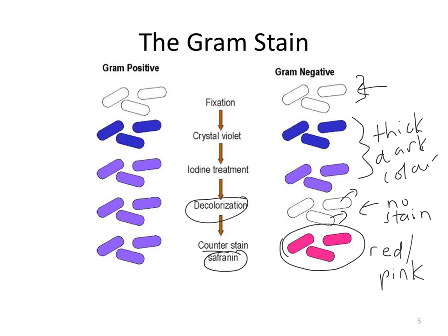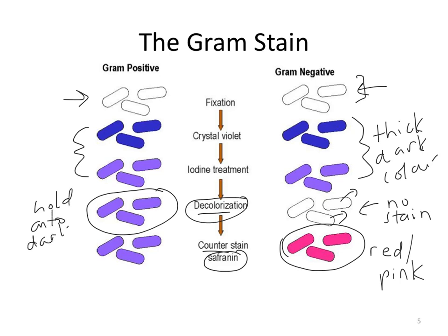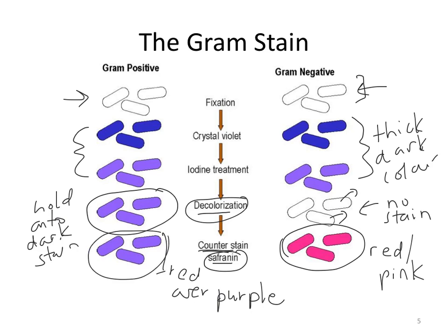Now the gram-positive, in contrast: you heat-fix it, stain it with crystal violet and Gram's iodine to get that thick, dark stain. You use the decolorizer, but because these cells have that really big, thick, rigid layer of peptidoglycan, they hold onto the dark stain. So when you counterstain, you're putting red over purple. If you think back to your watercolor days, you'll know that putting a layer of red over purple means you're not really going to see the red — you're still going to see the purple. That's why we see this dark purply-blue color in a correctly done gram-positive stain.